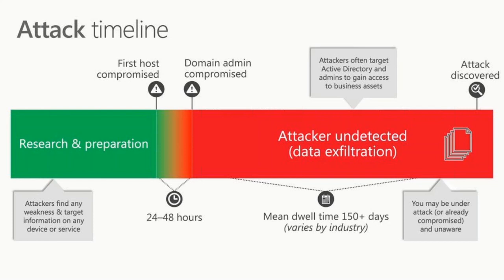Even more alarming — it takes approximately four to five months to understand that your domain admin credentials have been compromised. The discovery time is close to five months. With that span of time, an attacker can cause considerable damage to your organization. That's the problem we're trying to solve in this webinar: setting indicators of compromise from your logs to cut short attack discovery time.